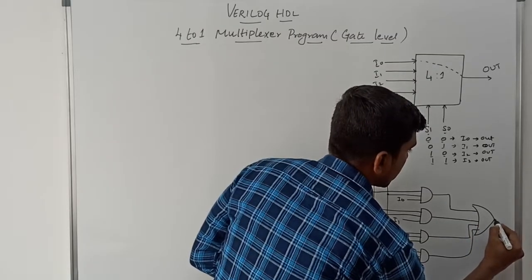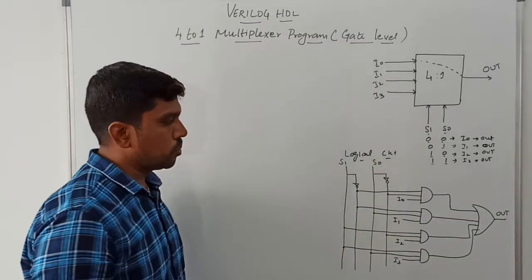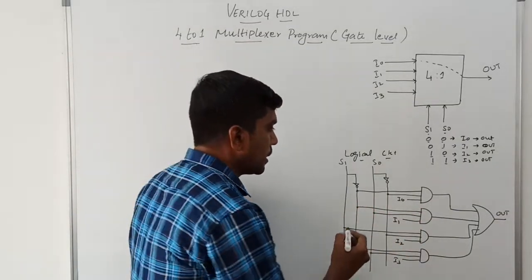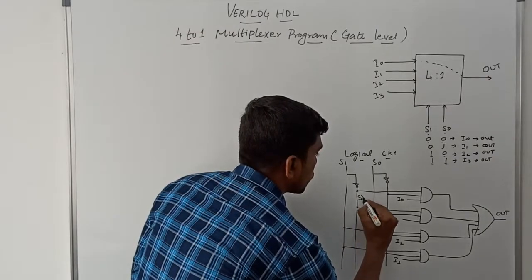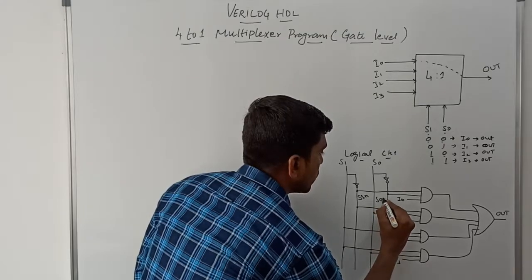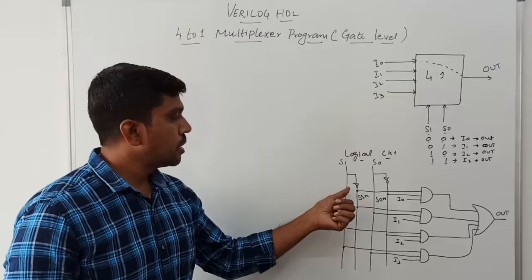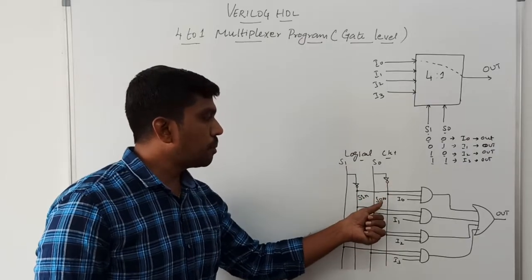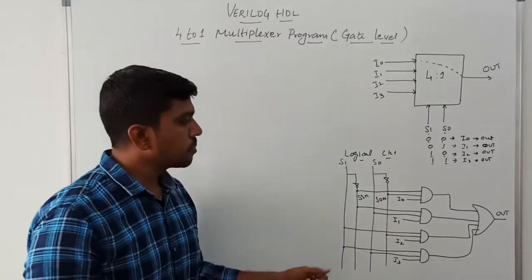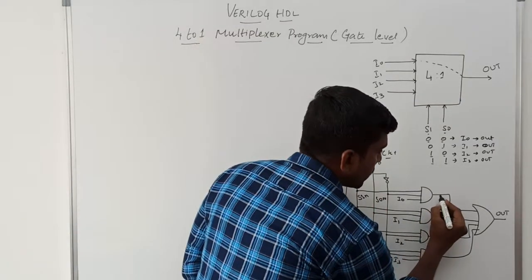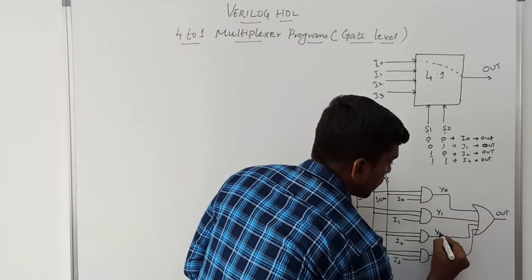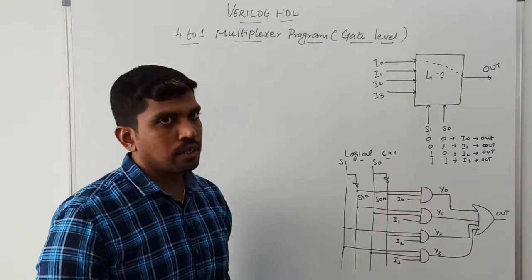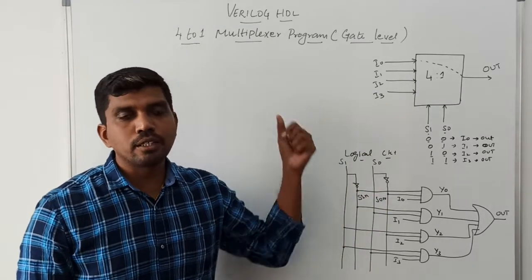The output of the MUX will be only 1 output signal. Then you assign the intermediate NET and internal NET signals. The intermediate NET signals are S1_N and S0_N, representing the complement of S1 and complement of S0 respectively. The internal NET signals are Y0, Y1, Y2, and Y3 — the 4 output signals from the AND gates. Based on this logical circuit only, we can write the program.